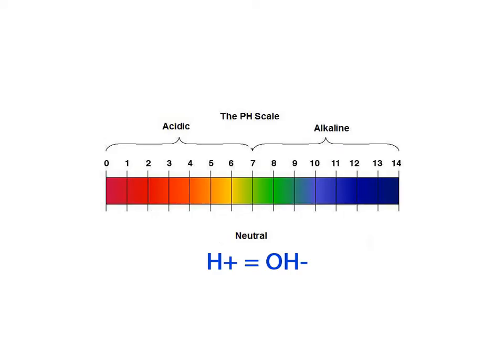On the pH scale, an equal number of positively charged hydrogen ions added to an equal number of negatively charged hydroxide ions results in a neutral solution with a pH of 7.